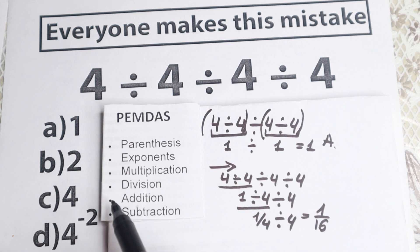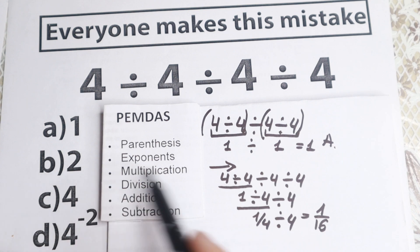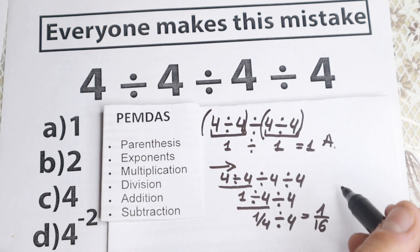But in other options we don't have it. We have 1, we rejected this option before. We have 2, which is not equal to 1 over 16. We have 4, which is not equal to 1 over 16. But 4 to the power minus 2, this is a really interesting expression.